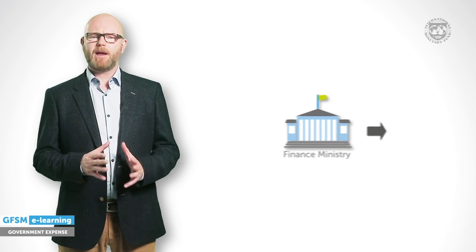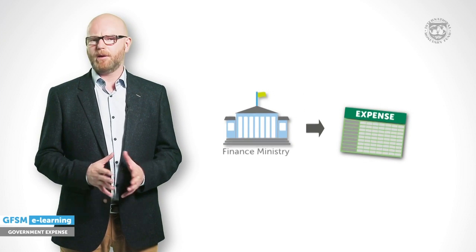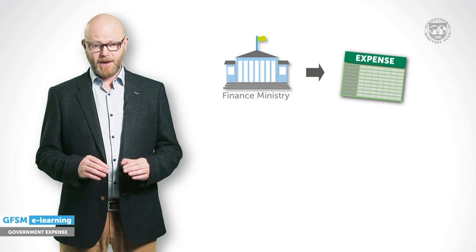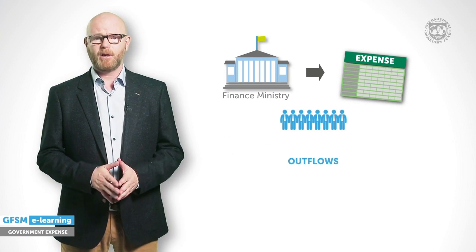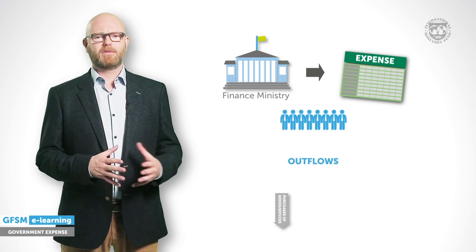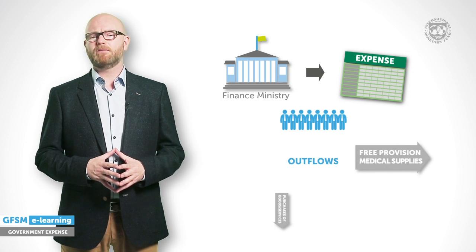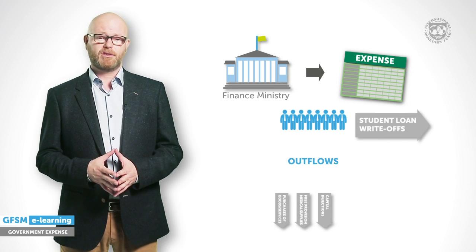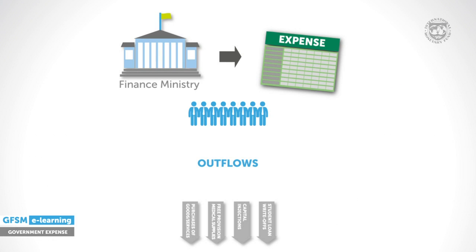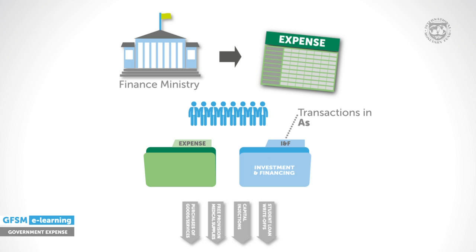Suppose the Finance Ministry is preparing a table of government expense components for a budget statement. While preparing the statement, the Finance Ministry staff reviews cash outflows such as the purchase of goods and services, the free provision of medical supplies from government inventories, capital injections into a public corporation, or write-offs of certain student loans. The staff first needs to identify the outflows that are classified as expense. Outflows not classified as expense will relate to investment and financing — transactions in assets and liabilities.